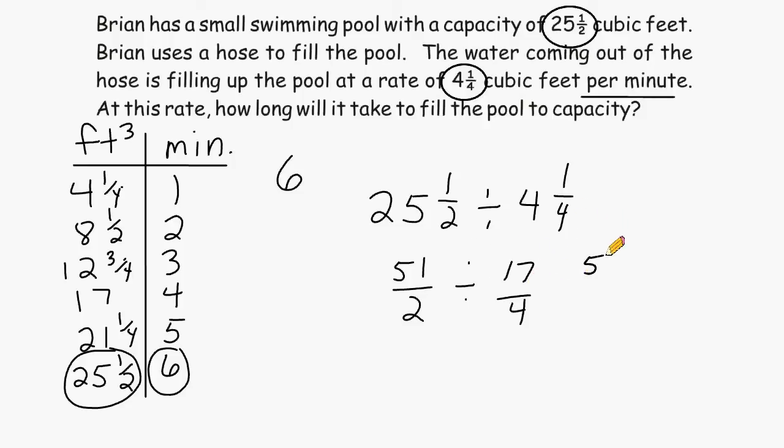Next, we have to rewrite the problem as 51 halves multiplied by the reciprocal of 17 quarters, which would be 4 seventeenths.